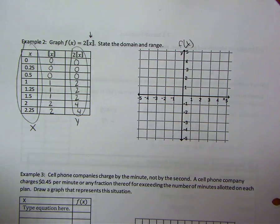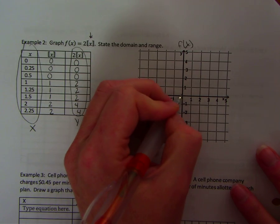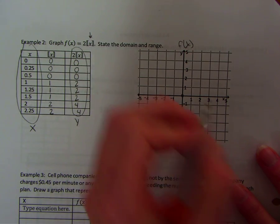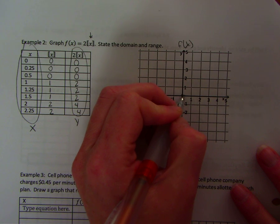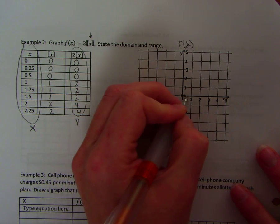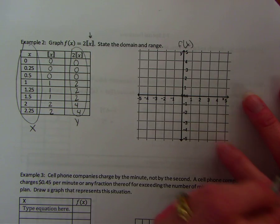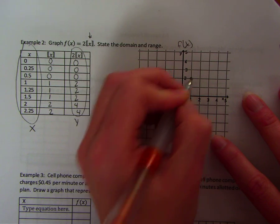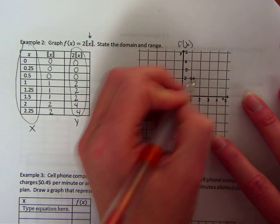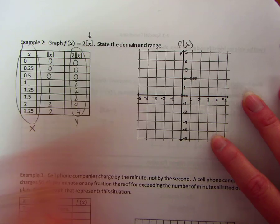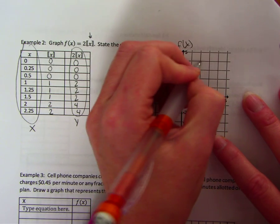And so if we plot these: 0, 0. 0.25 or a quarter is at 0. 1 half is at 0. When we get to 1 it jumps to 2. 1 and a quarter is at 2. 1 and a half is at 2. When we get to 2 it jumps to 4.